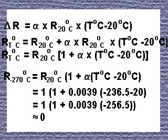Thus, the new resistance is given by the equation: R at temperature T = R₂₀°C + α × R₂₀°C × (T°C - 20°C).